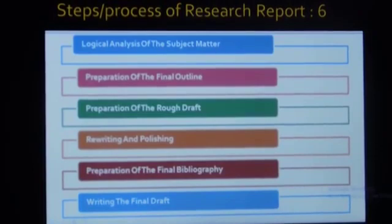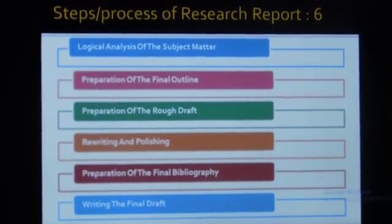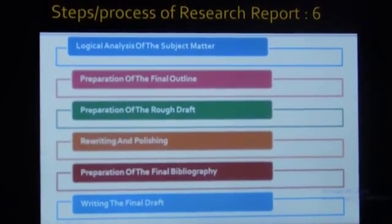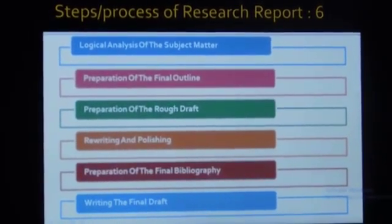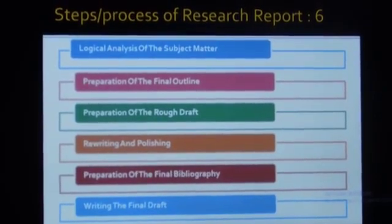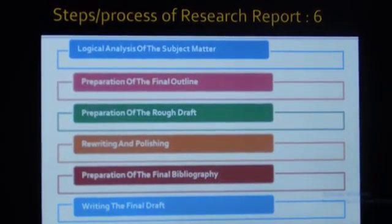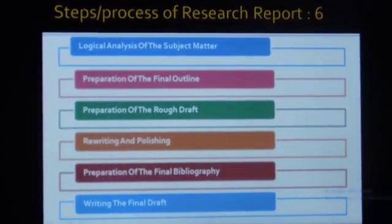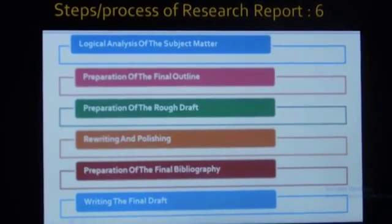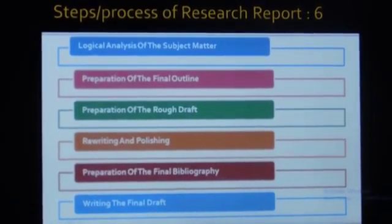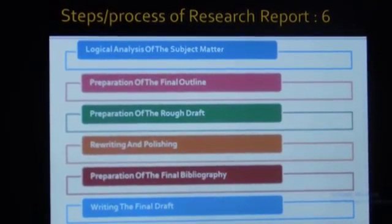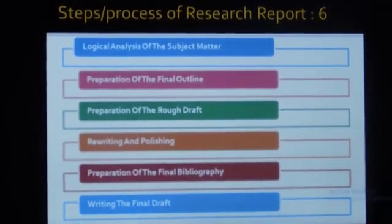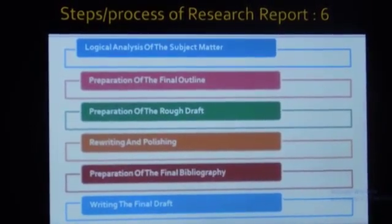These are the steps or process of research report writing, covering six steps. First is logical analysis of the subject matter — you should know your subject very well before presenting or writing your report. Second is preparation of a final outline — selecting the approach for your research report writing is very important to make it more interactive and attractive. Third is preparation of a rough draft, like a synopsis.